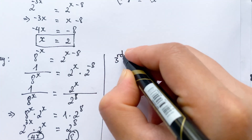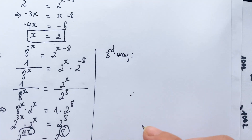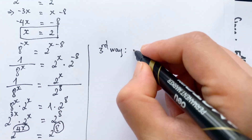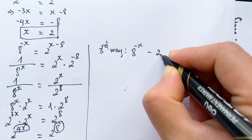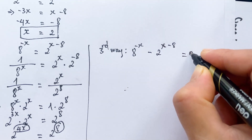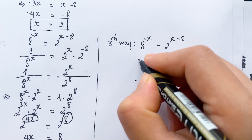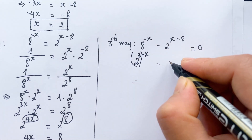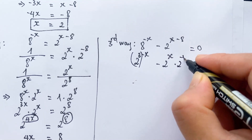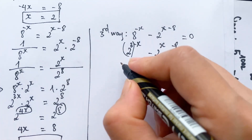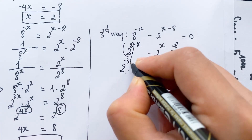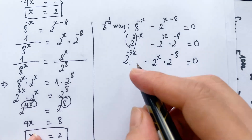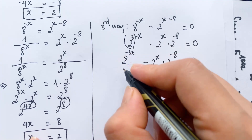For the third way, everyone can see you need to move 2 power x minus 8 to the left hand side. Therefore we can write 8 power minus x minus 2 power x minus 8 equals zero. You can write 2 power 3 whole power minus x minus 2 power x times 2 power minus 8 equals zero, giving 2 power minus 3x minus 2 power x times 2 power minus 8 equals zero.